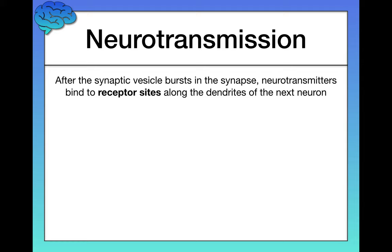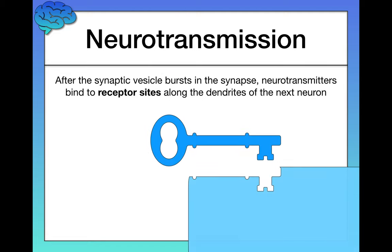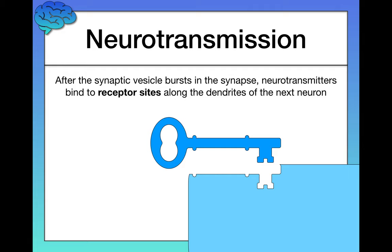We talked about the process of the synaptic vesicle — the sort of taxi, the Uber, the Lyft that contains neurotransmitters traveling down each neuron, bursting at the axon terminal in the synapse, releasing those neurotransmitters. Now I want to talk more about what it means for the dendrites to receive the signal from the previous neuron. What this really means is there are neurotransmitters floating around in the synapse, and there are receptor sites on the dendrites of the next neuron that are ready to accept the correct neurotransmitters. The relationship between neurotransmitter and receptor site is the same as the relationship between a lock and a key — the neurotransmitter is the key, and the receptor site is the lock. Each receptor site only works with a particular type of neurotransmitter; you can't have the wrong neurotransmitter on the wrong receptor site.